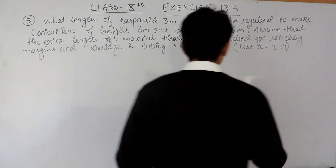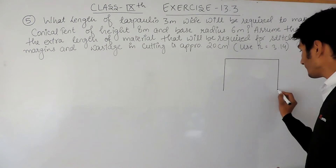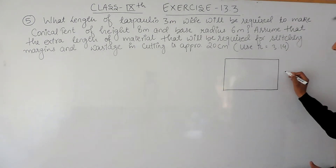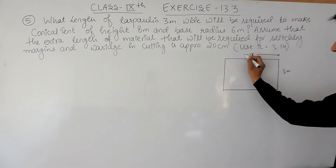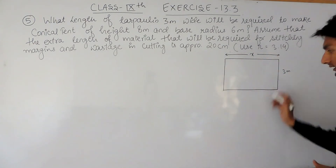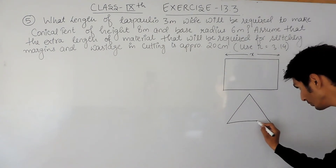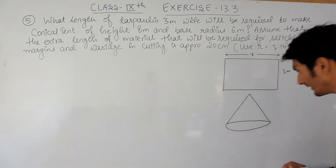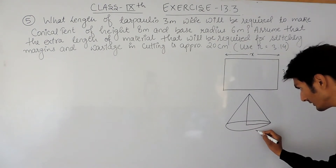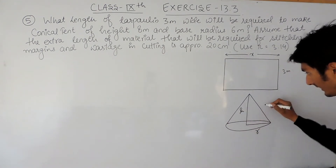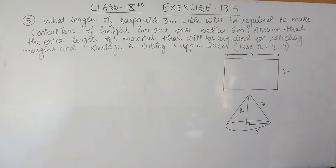We have to use a rectangular tarpaulin that is 3 meters wide and find its length to make a conical tent. The cone has a height, a radius, and a slant height, and these three form a right angle triangle.